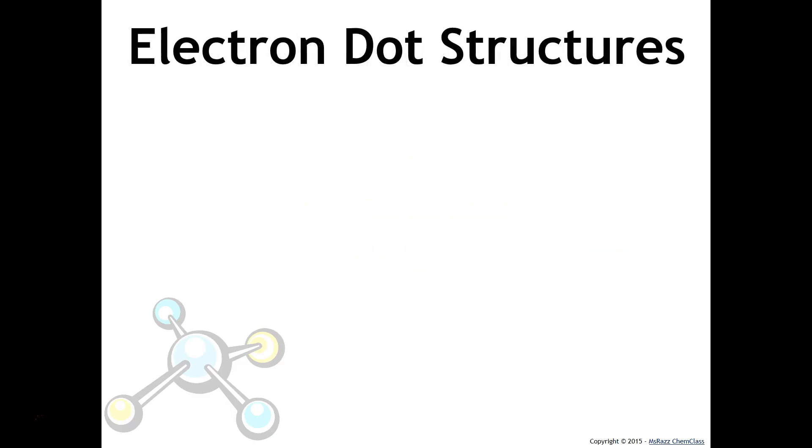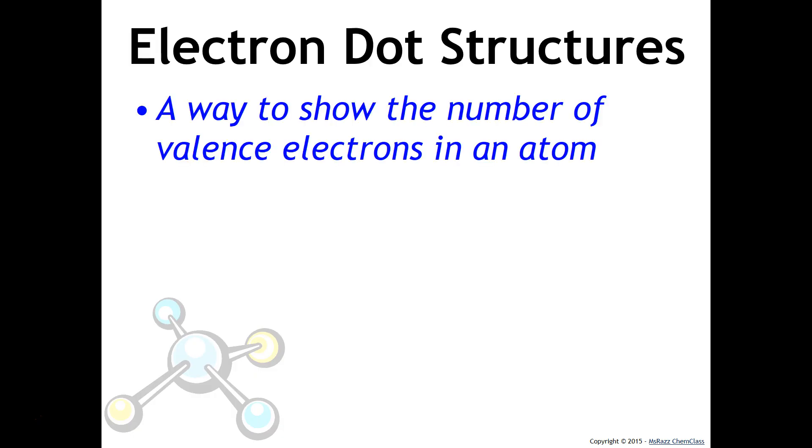As you can imagine, the valence electrons are extremely important, and so we use something called electron dot structures, which are also called Lewis dot diagrams, to indicate the way the valence electrons are arranged. Electron dot diagrams are a way to show the number of valence electrons that an atom has. These are very important, because these are the ones that are going to participate in bonding.